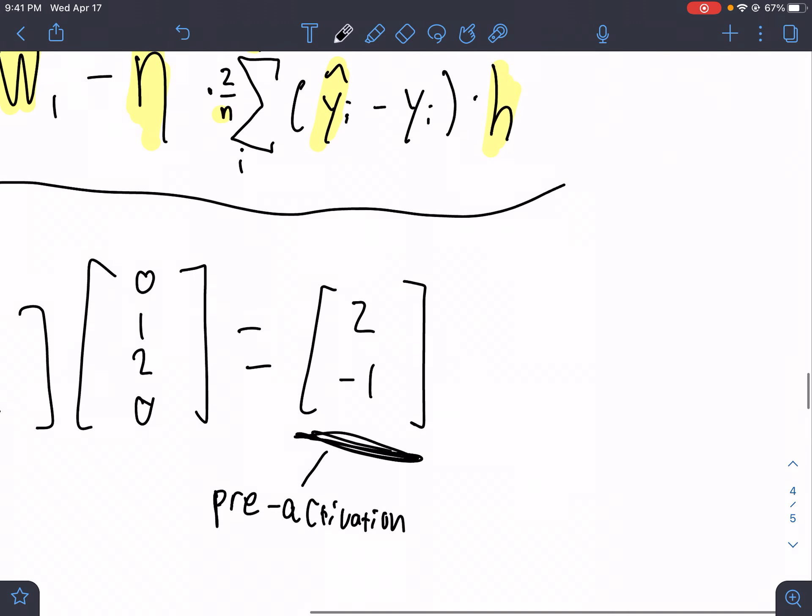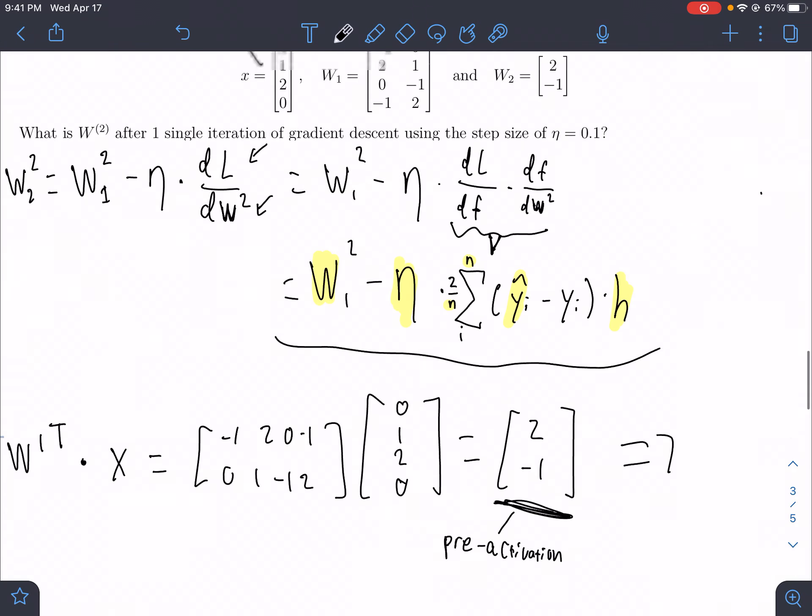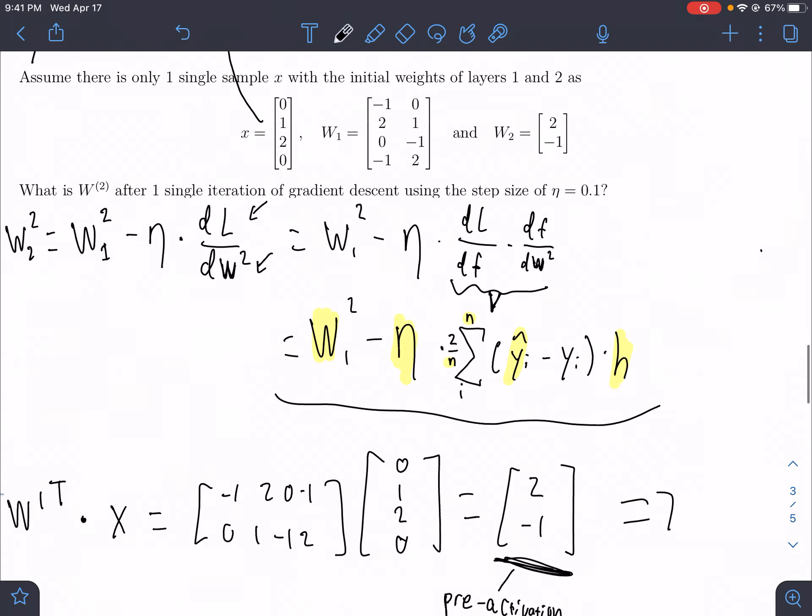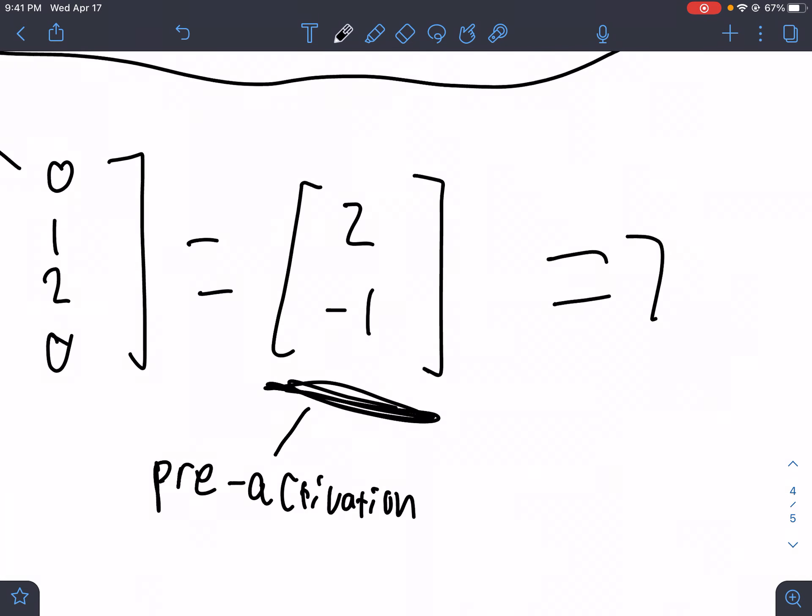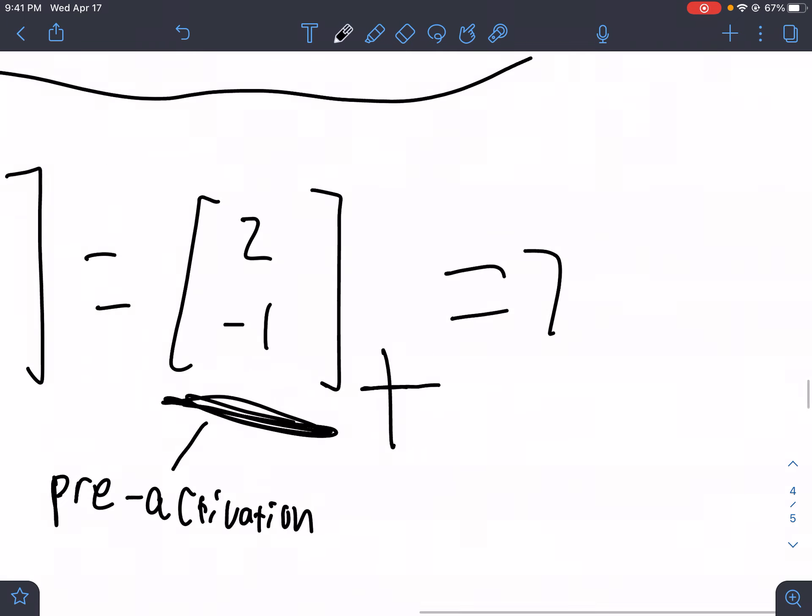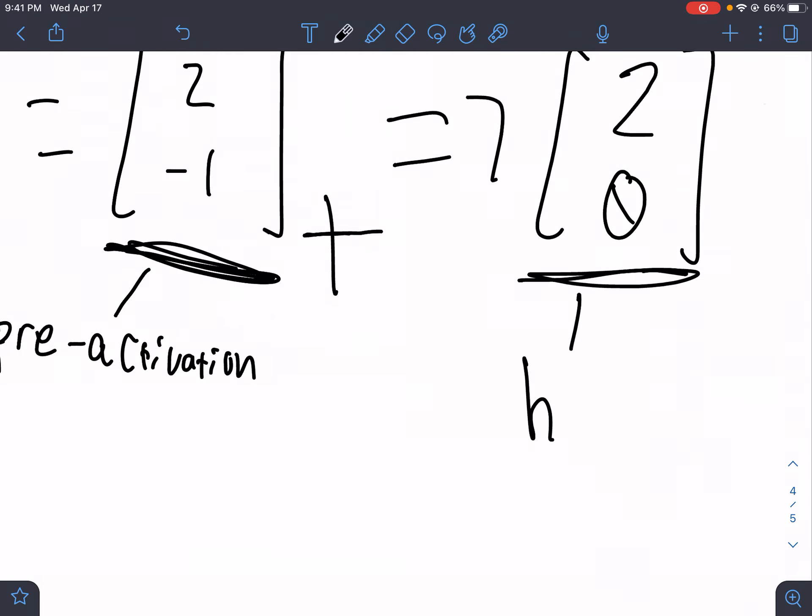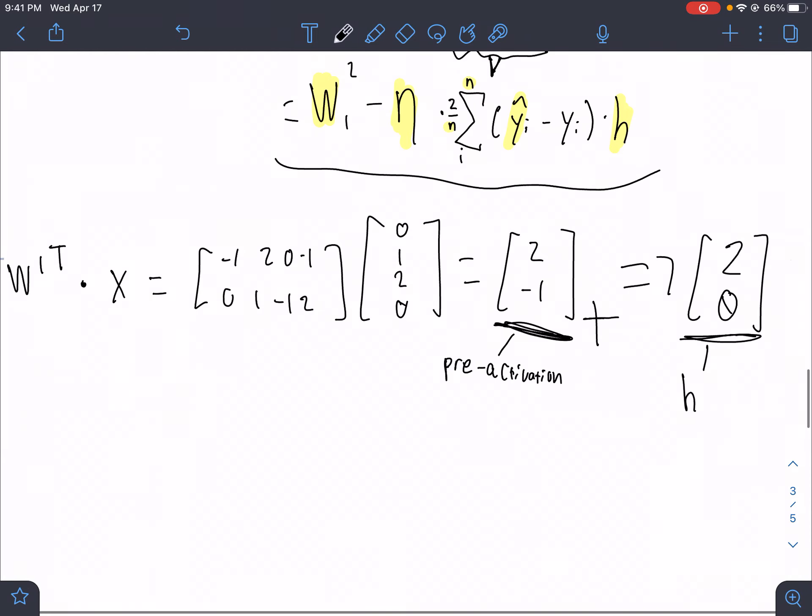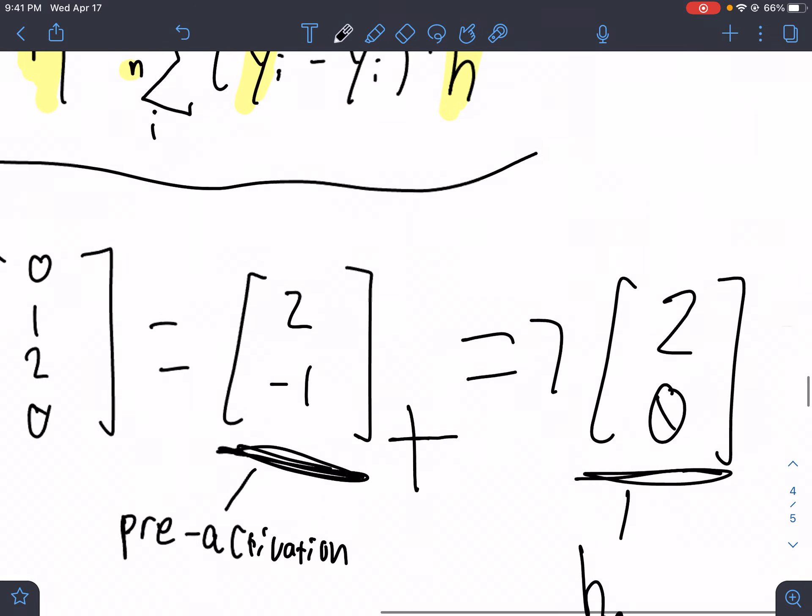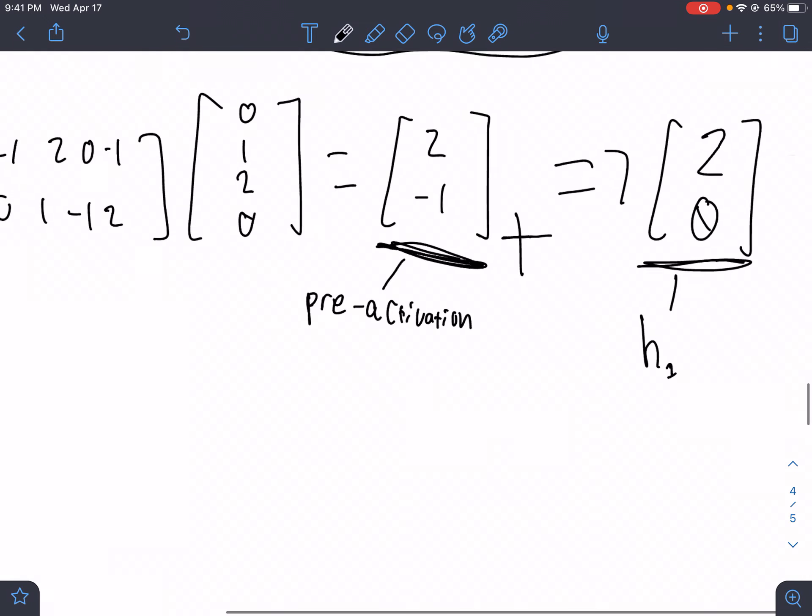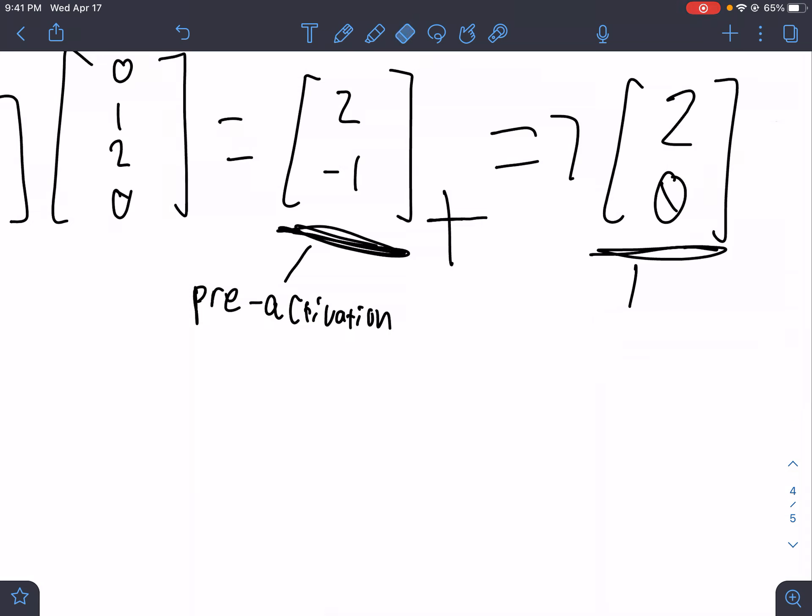How would we get to our post-activation value? Well, what's our activation function? It's ReLU. So all we do to get to our post-activation function is we apply our activation function to our pre-activation value. We denote ReLU with a plus sign and apply ReLU to every single element. 2 is greater than 0 so we return 2, and negative 1 is less than 0 so we return 0. This is our post-activation value, which we can also refer to as h in this case.